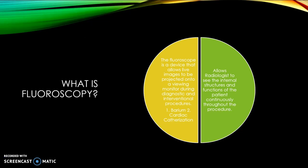What is fluoroscopy? Fluoroscopy is similar to an x-ray movie — it's a continuous beam that's passed through the body part being examined. The beam is transmitted to a TV-like monitor so the body part in motion can be seen. This exam enables radiologists to look at the skeletal, digestive, urinary, respiratory, and reproductive systems.